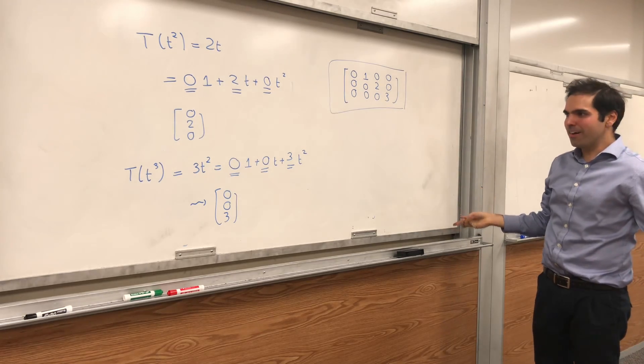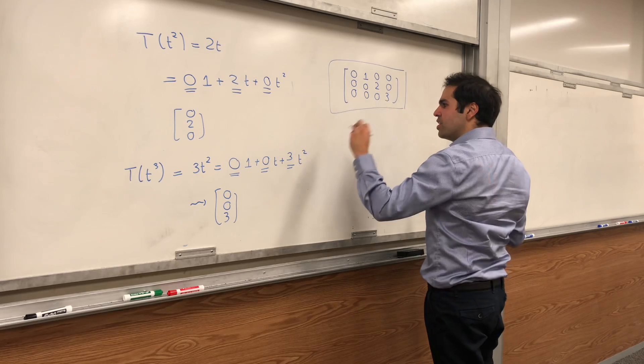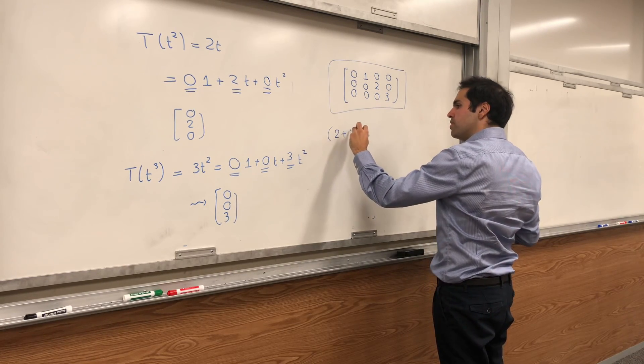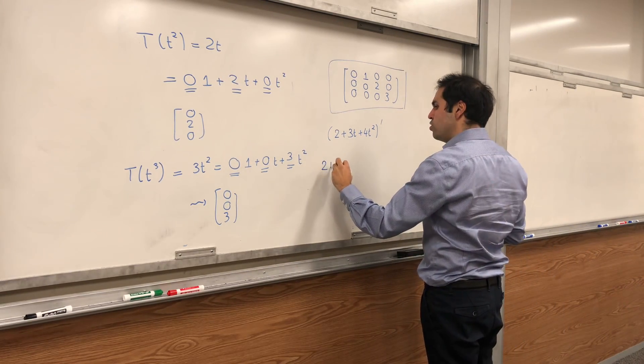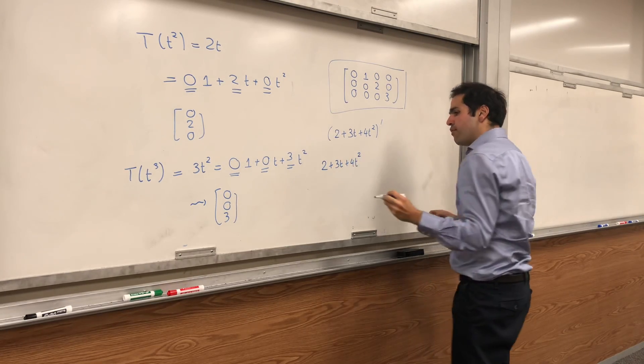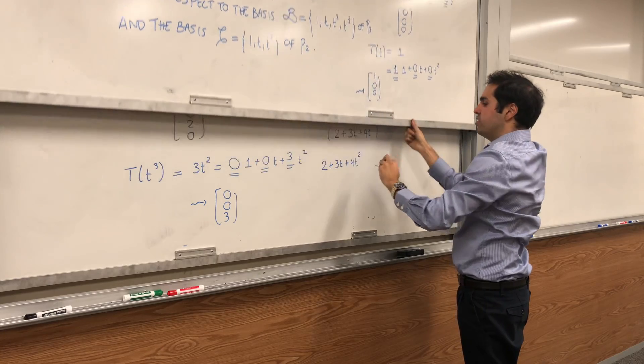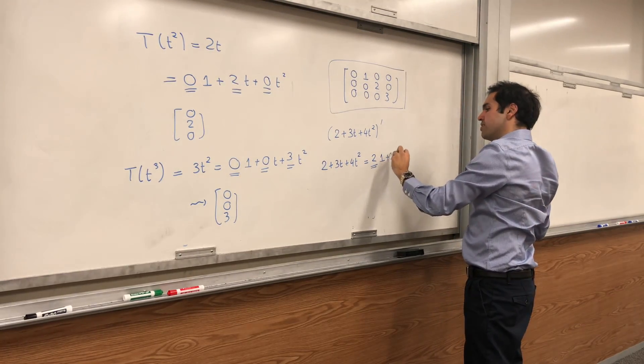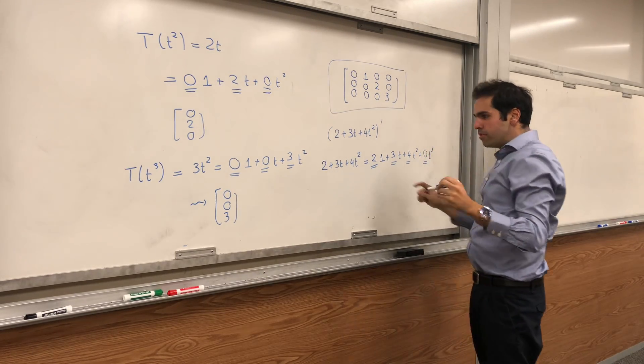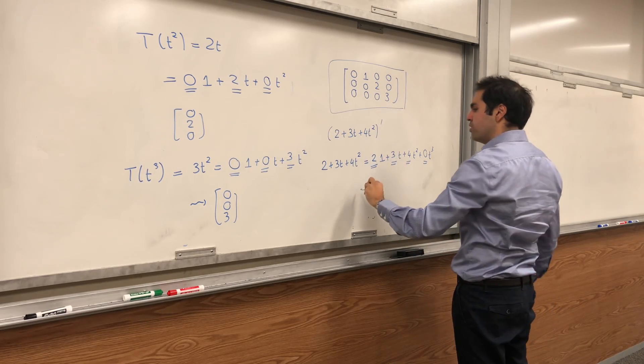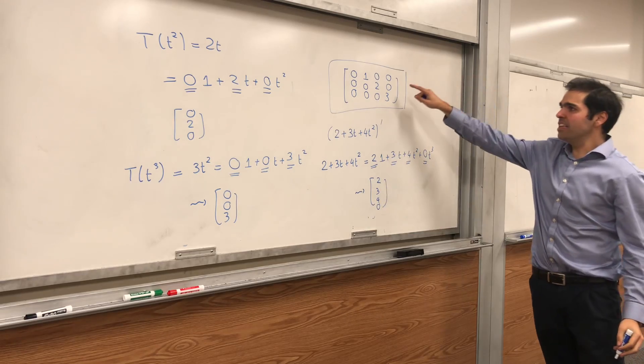So it is a derivative in a box. And let me show you how to use this matrix to calculate a derivative. Let's use it the linear algebra way to calculate, for example, 2 plus 3t plus 4t squared prime. First of all, express it in terms of your basis b. So the coordinates of this vector with respect to the input basis is 2, 3, 4, 0.